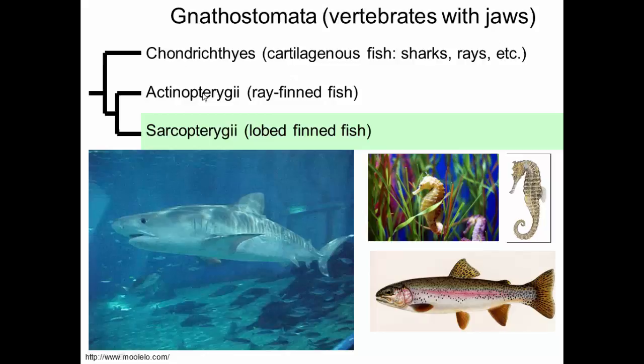Then we have two groups of fish that have bone: ray-finned fish, Actinopterygii, and lobe-finned fish, Sarcopterygii. When you think of a fish, you're probably thinking of an Actinopterygii — tuna, salmon, and all those things are ray-finned fish. This is what a seahorse looks like; I had a student who didn't realize the seahorse was a fish. They look kind of weird, but they're fish — ray-finned fish, Actinopterygii. This is a very diverse group with lots and lots of species.